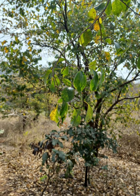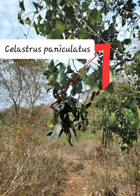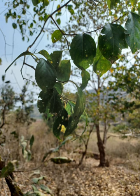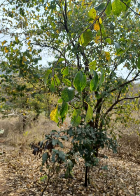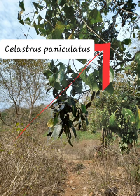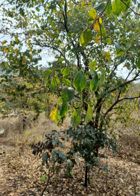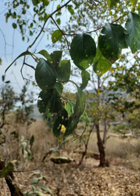Celastrus paniculatus is a woody fruit-bearing climbing shrub or a liana. It is commonly known as the black oil plant, climbing staff tree, or intellect tree. In Sanskrit it is called Jyothismati, in Hindi it is called Malkagani, and in Chinese it is called Deng Yuteng.